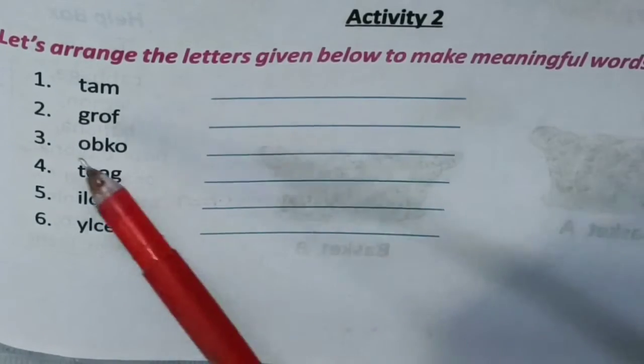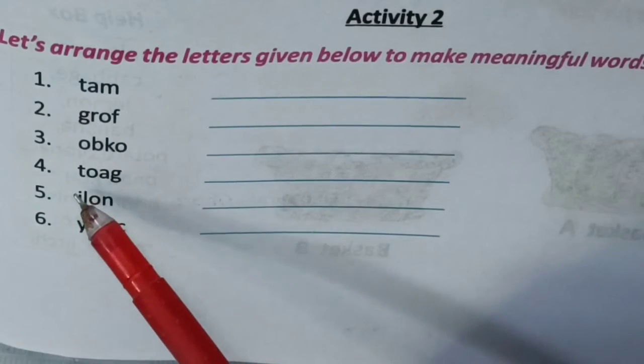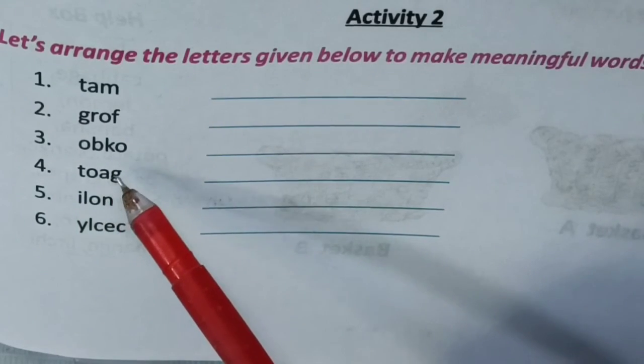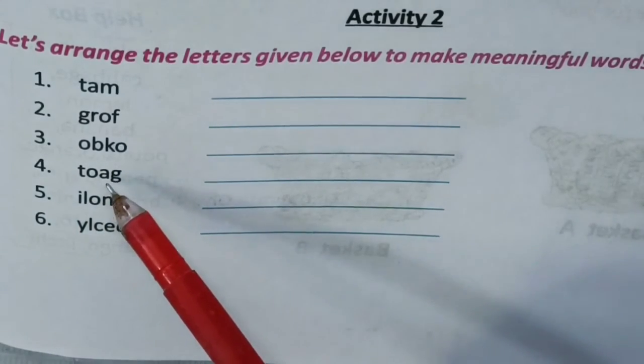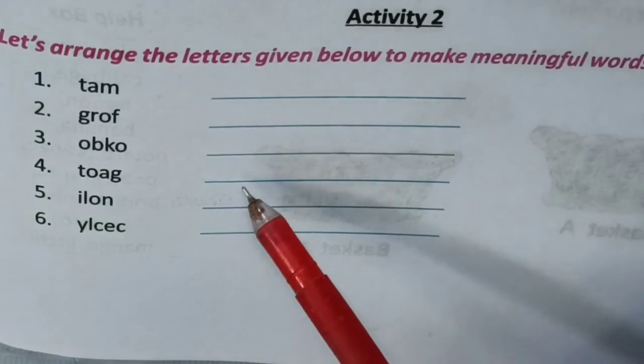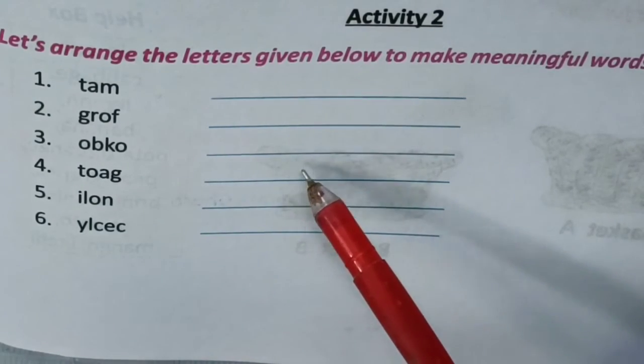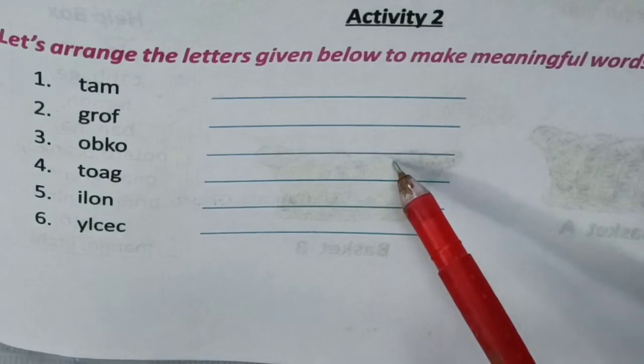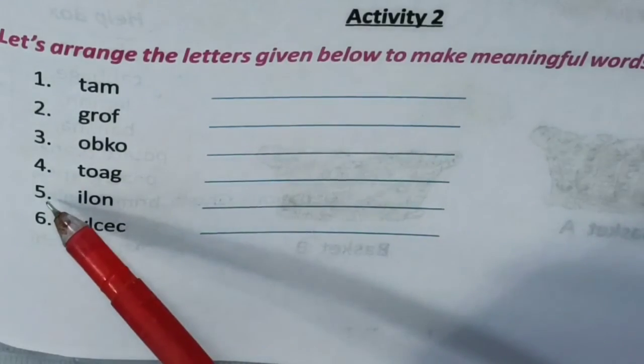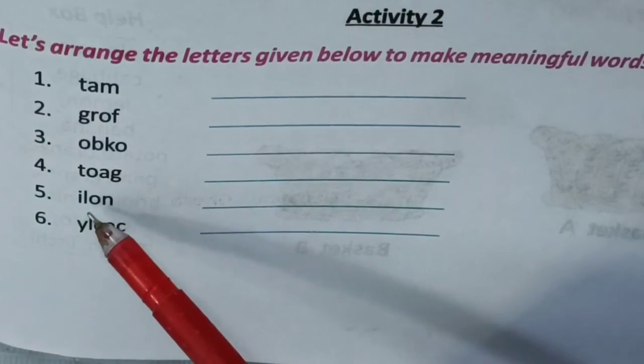Number 3 O B K O તાલે ઉલ્ટો પાલ્ટા આચે શાજાલે આમરે પાબો B O O K. Number 4 G O A T goat means છાગોલ